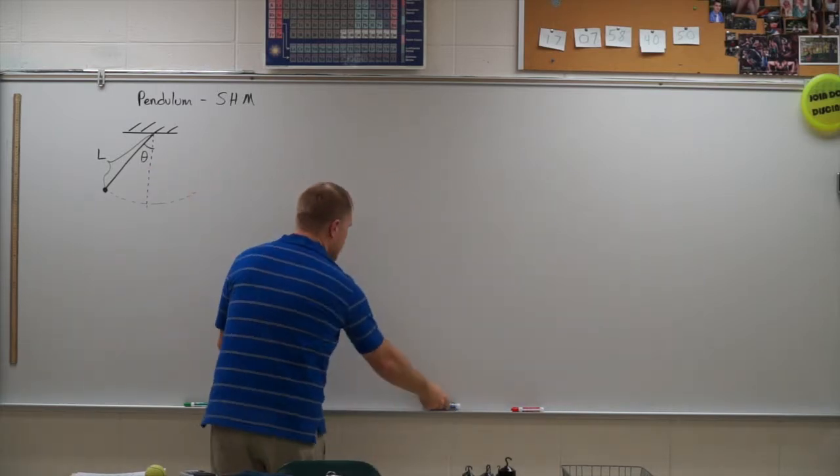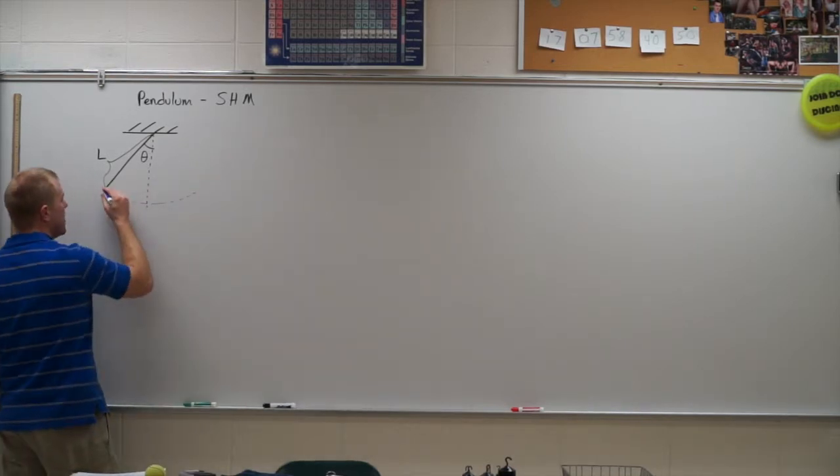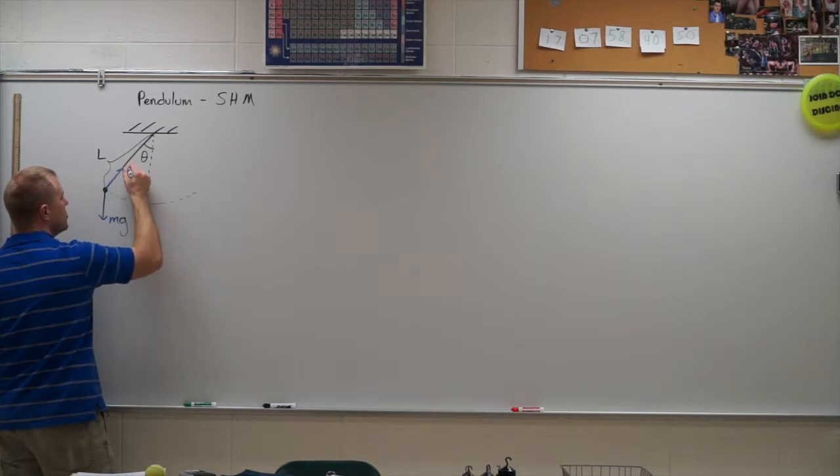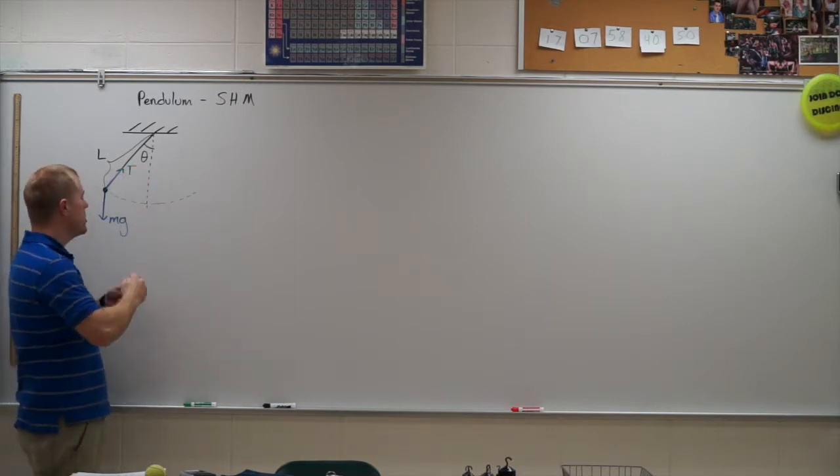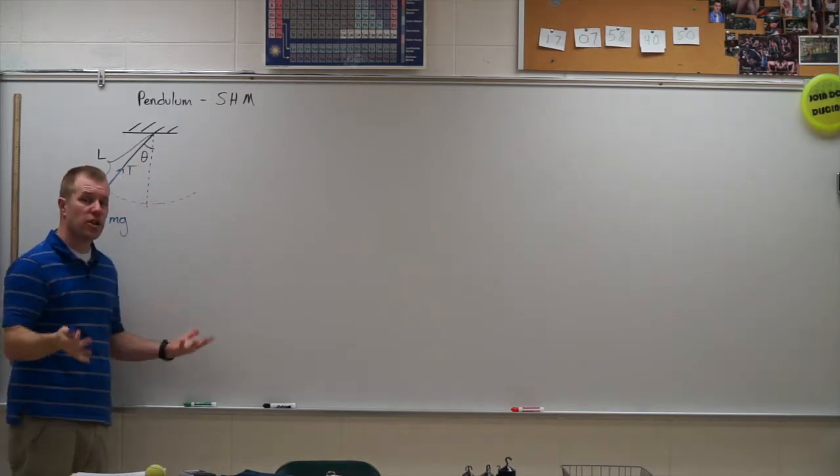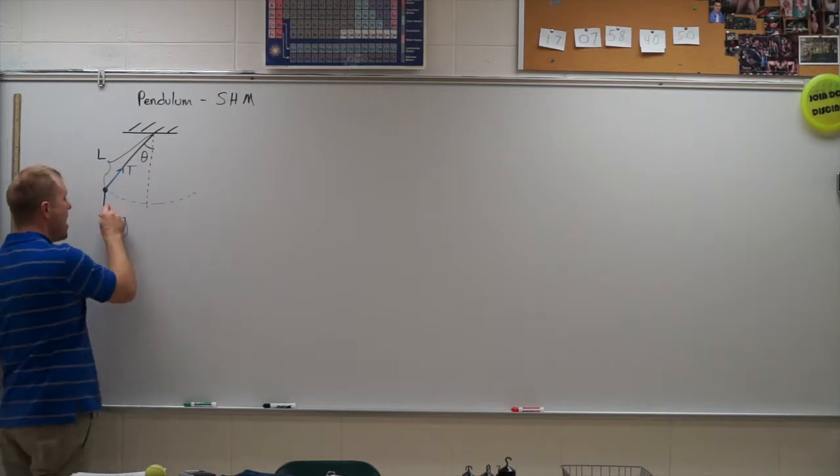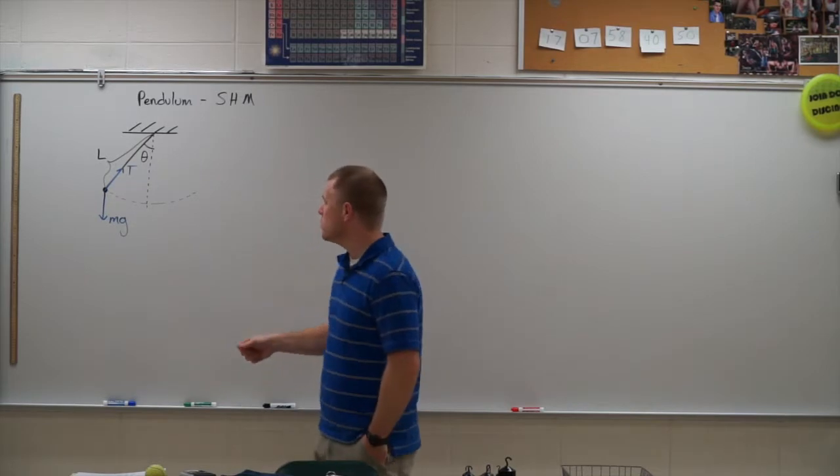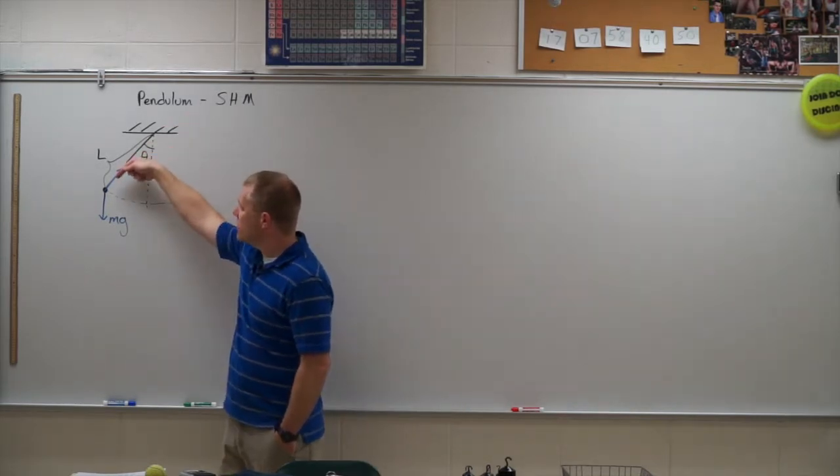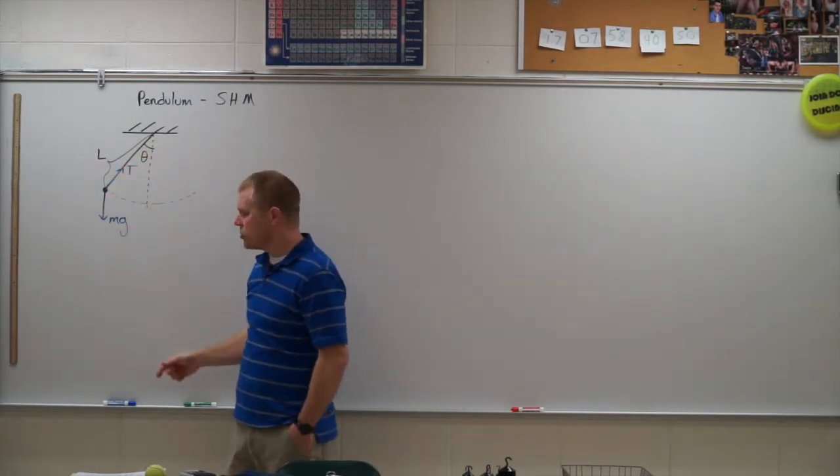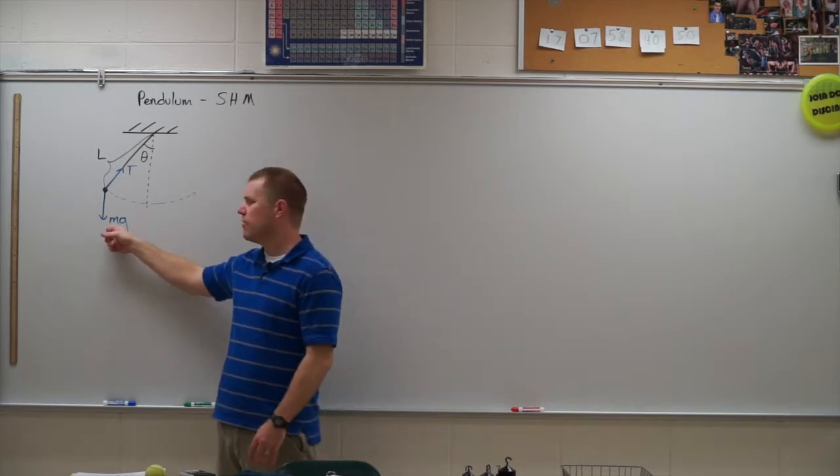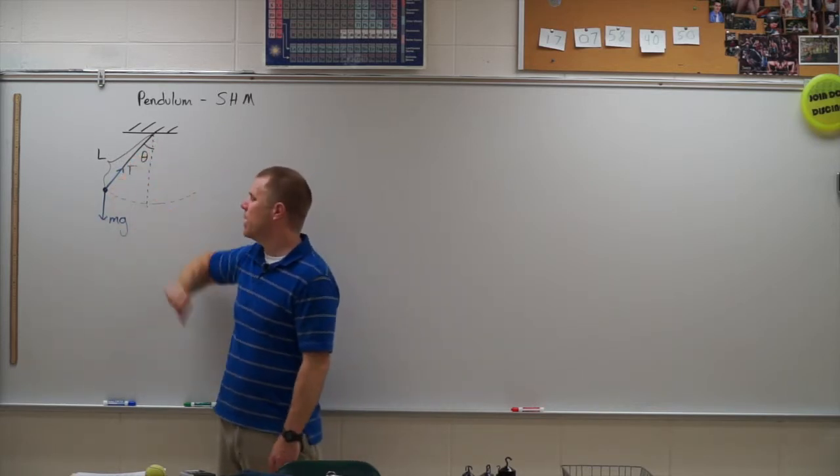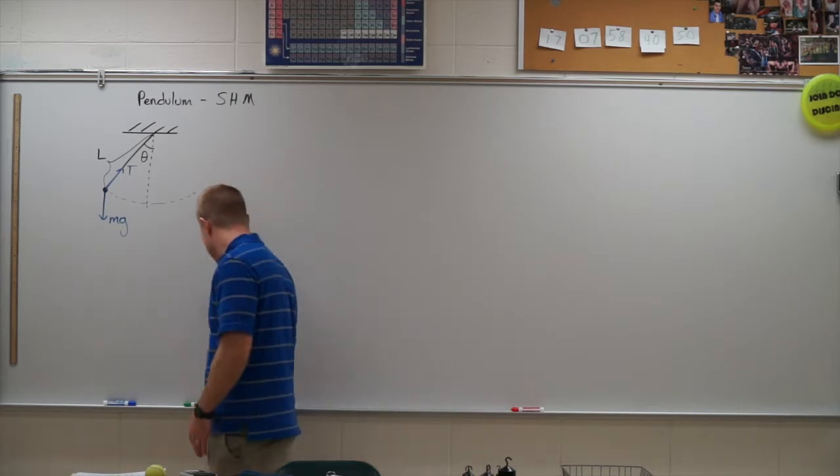In order to do that, I first need to get some forces on here. Acting on this I have gravity and tension. Tension is along the radial line so I don't have any torque from that. MG is going to produce some torque, and remember torque is produced by the R vector cross the force vector. So I've got to find the perpendicular component of that force and then multiply it by the radius here.